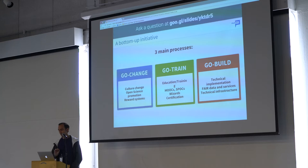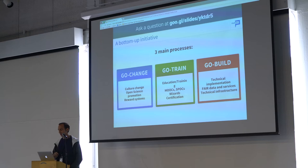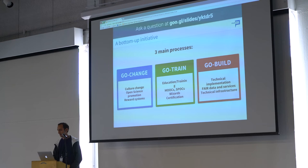The GoFair implementation approach is based on three main pillars: Go Change, which focuses on creating cultural change and promoting open science and FAIR principles; Go Train, which focuses on having certified data experts and institutes to support FAIR implementation; and Co-Build, which deals with technical implementation, creation of infrastructures, and harmonization of standards and protocols.